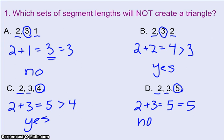So this problem says which sets of segment lengths will not create a triangle? My answer would be A and D because A and D do not create a triangle.